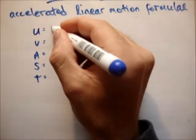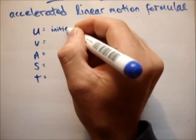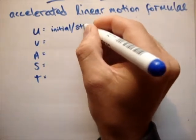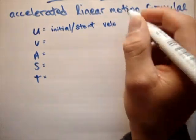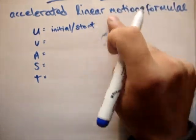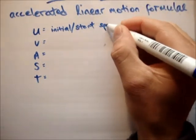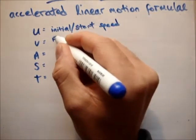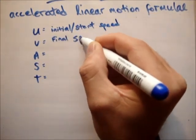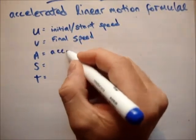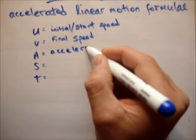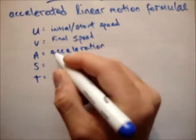So essentially, u is equal to your initial or start speed, v is your final speed, a is acceleration, and s is the distance.